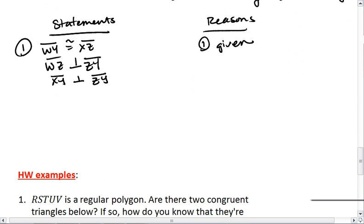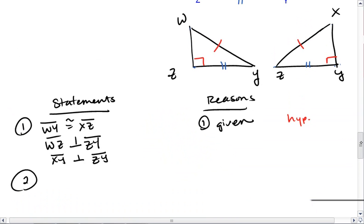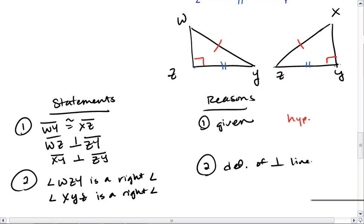This gives us our hypotenuse. I can then say, looking at our triangles, that angle WZY is a right angle and angle XYZ is a right angle. This is by the definition of perpendicular lines. So this gives me the important right angle part of hypotenuse leg.